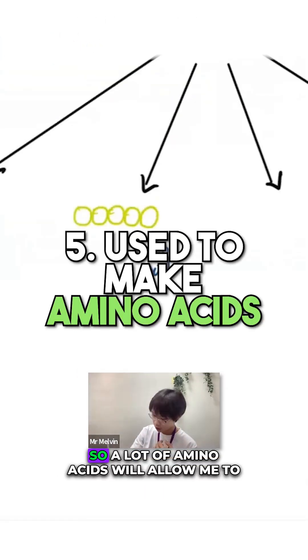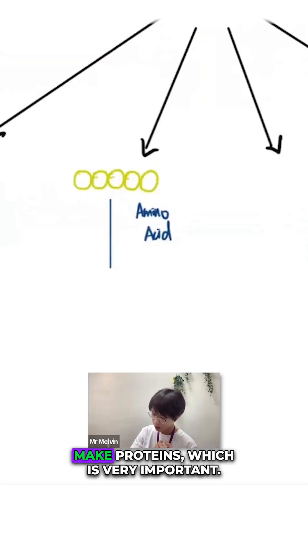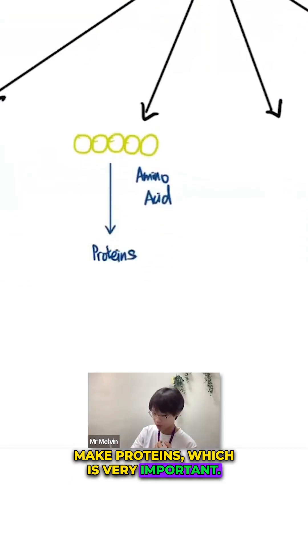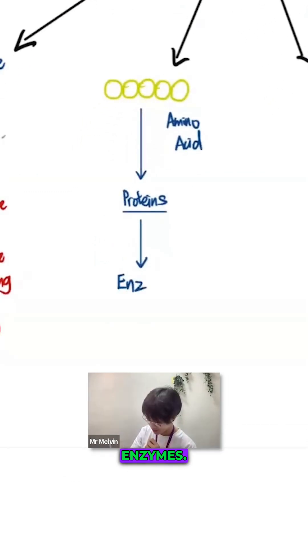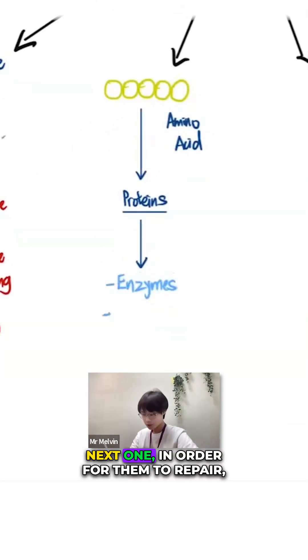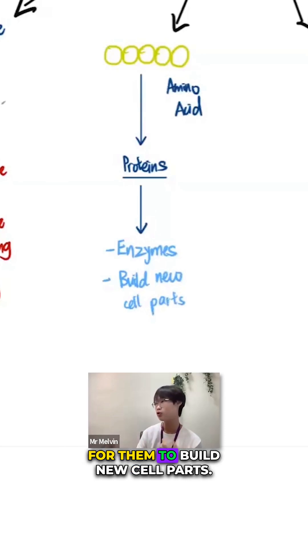Used to make amino acids. A lot of amino acids will allow me to make proteins, which is very important. Plants also need proteins. What is the main purpose for plants to make proteins? Enzymes. Enzymes is a type of protein. Also, in order for them to repair and build new cell parts.